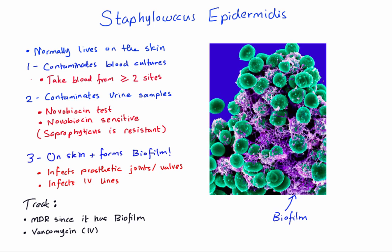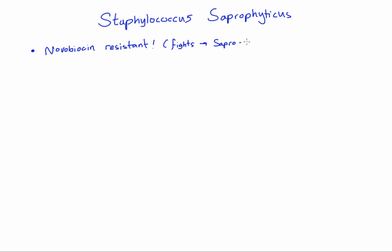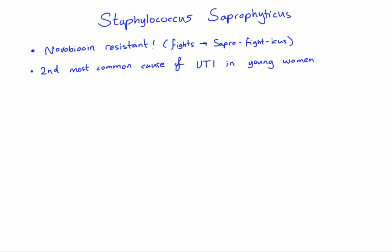Staphylococcus saprophyticus is the last medically important Staphylococci species. It is novobiocin resistant — remember 'Saprophyticus fights novobiocin.' Its favorite infection is UTIs; it's the second most common cause of UTIs in sexually active young women. Treatment is simple: just penicillin, as it doesn't have the resistance factors of Staph epidermidis or Staph aureus. That's all for Staphylococci — see you in the next video about Streptococci.